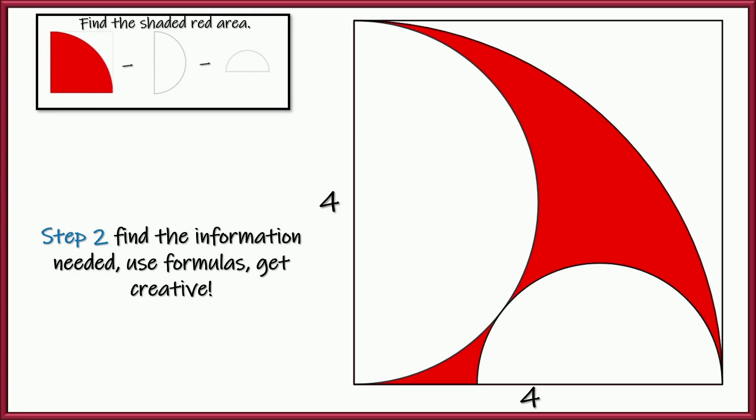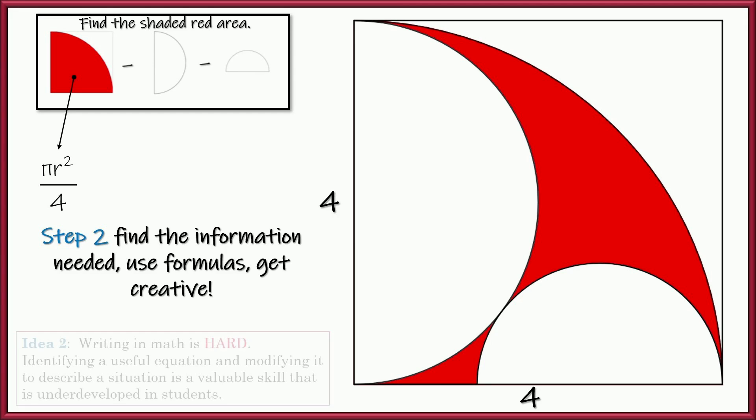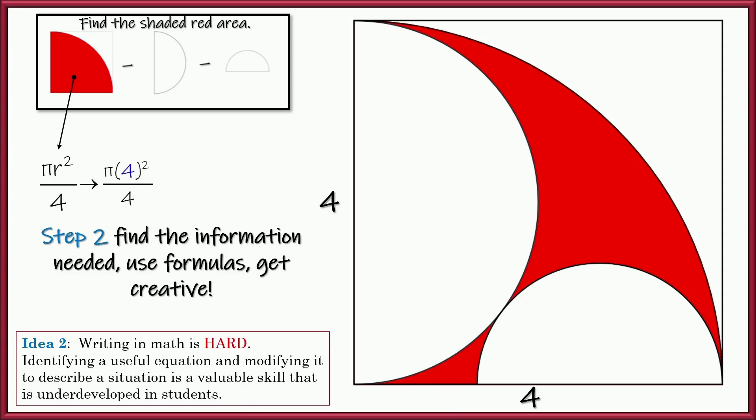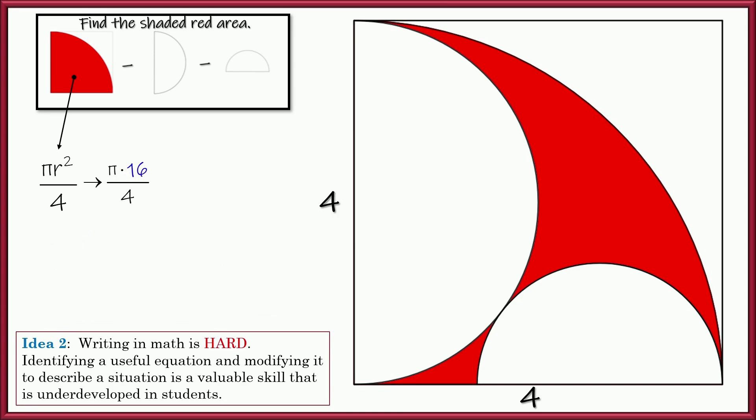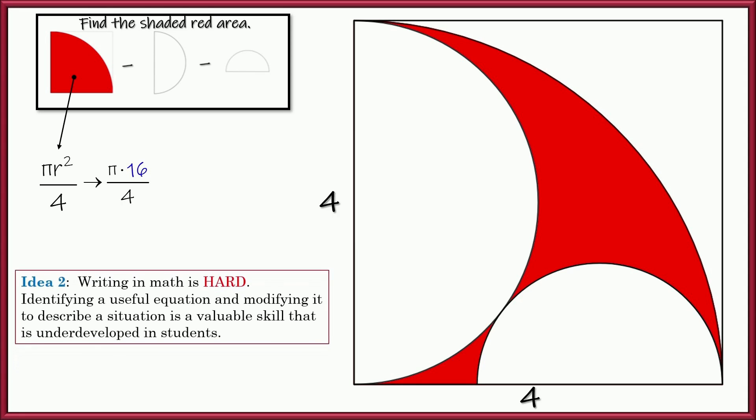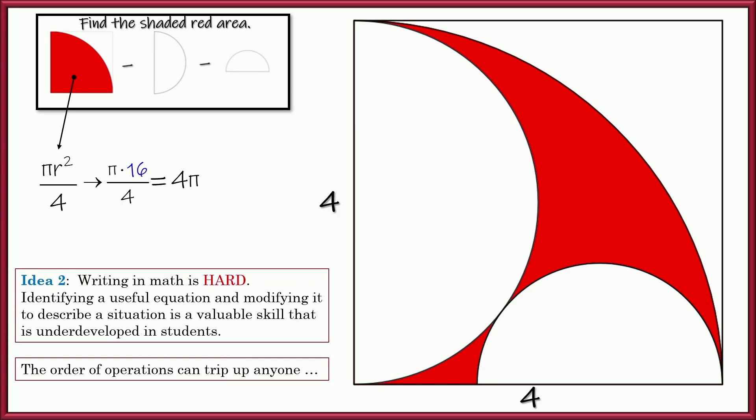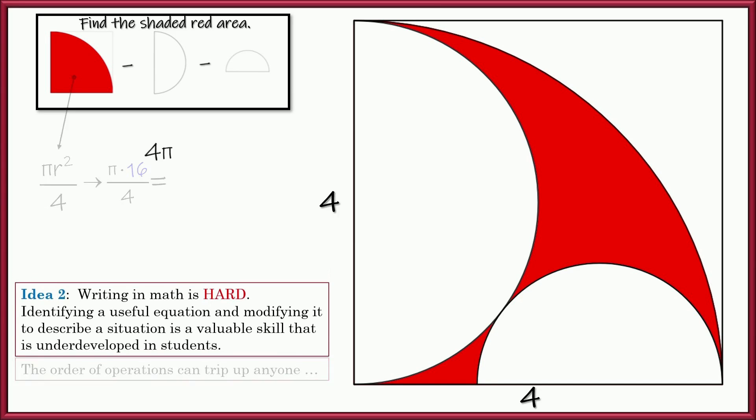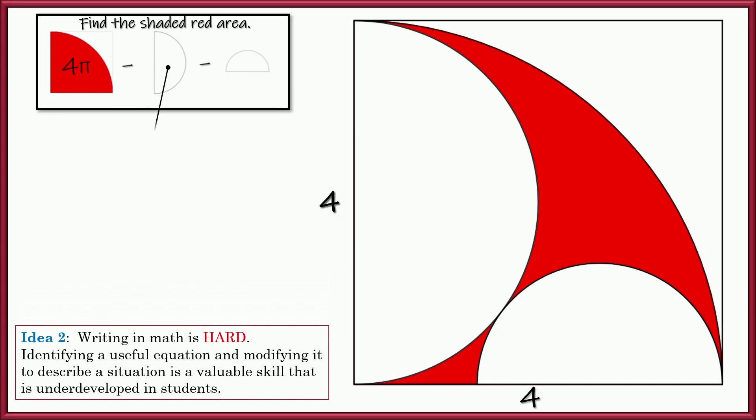All right, so now the second thing we've got to do is, well, we've got to figure out how to find that information. So we're going to have to use some formulas. Pi r squared divided by 4, well, that's not a typical formula, and writing math is really difficult. So students having experience coming up with stuff like this, I think, would also be quite valuable. All right, so now we're just going to substitute in the radius that we know is 4, and we've got to follow the order of operations, which, man, that's no layup at any point. That can mess up anybody, right? But we're going to go ahead and square first and then reduce. 4 goes into 16, 4 times, so 4 pi is the area of the quarter circle.